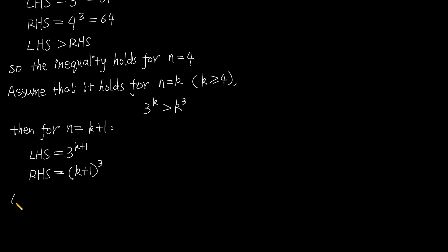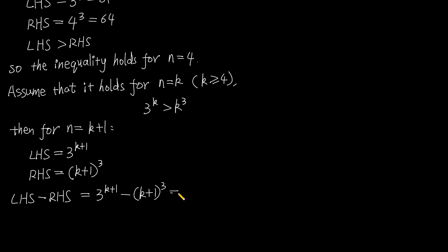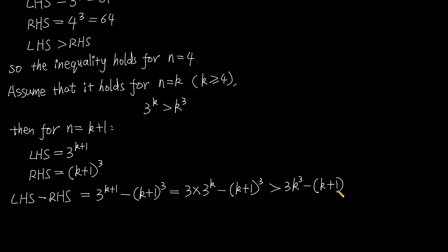Now use left hand side minus right hand side. If the result is larger than 0, then it certifies that left hand side is bigger than right hand side. So left hand side minus right hand side equals 3 to the power of k plus 1 minus (k plus 1) to the power of 3, which equals 3 times 3 to the power of k minus (k plus 1) to the power of 3, and this is larger than 3 times k to the power of 3 minus (k plus 1) to the power of 3.